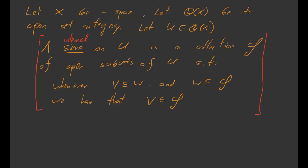Whenever V is inside of W and W is inside of the sieve, then V is also inside of the sieve. One way of remembering this is to use the analogy furnished by the definition: think that V inside of W means V is smaller than W. And saying that W is inside of S means that W fell through the sieve. Since V is smaller than W, if the big thing W fell through the sieve, then the small thing V should have fallen through the sieve too — that's why V will also be inside of S.